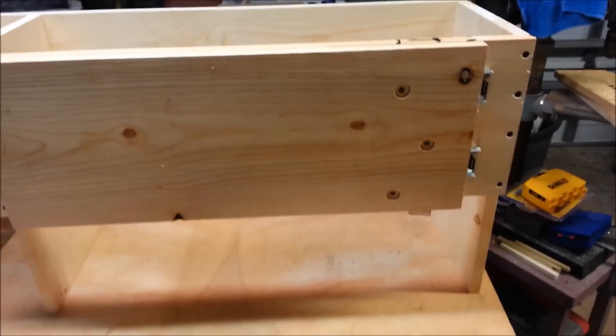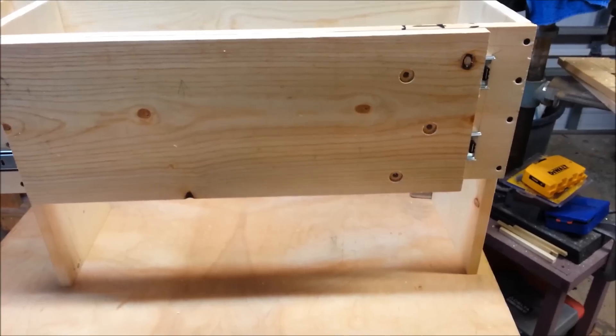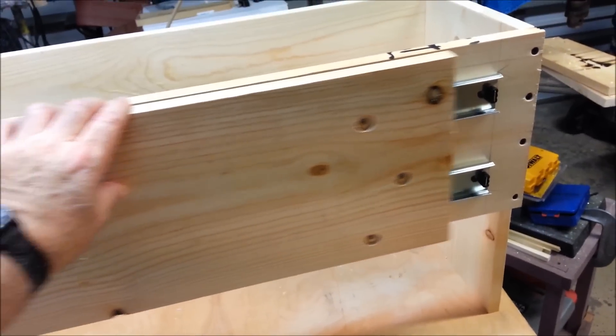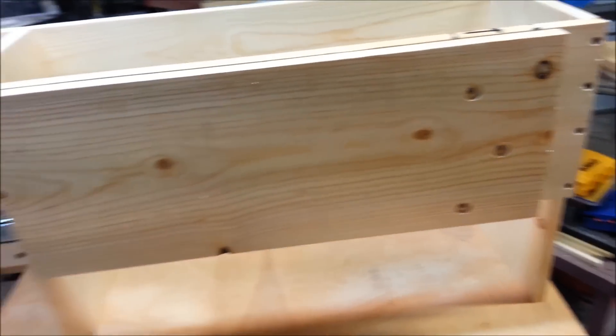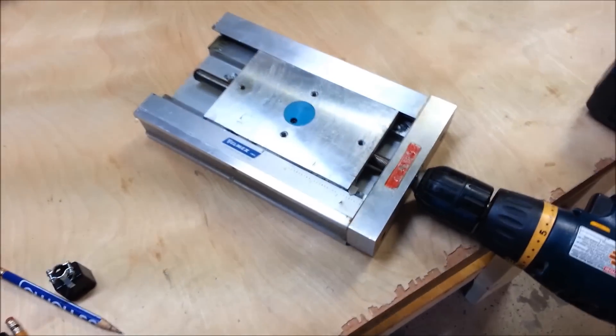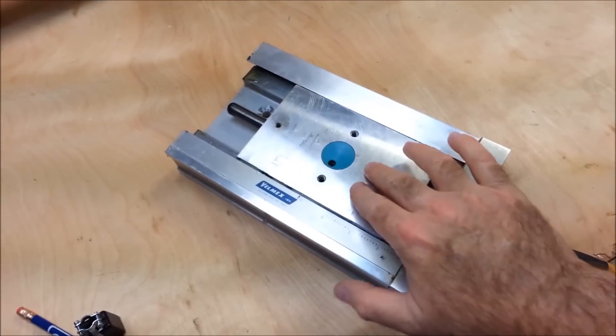This is going to mount up here on the superstructure that holds the Y axis. And it's going to mount on this piece of wood here that goes back and forth. That's the Y axis. And then this will go up and down to give me up and down motion. The router is going to mount on here.